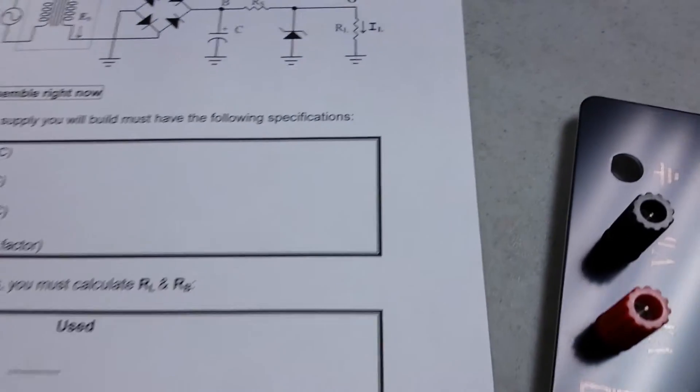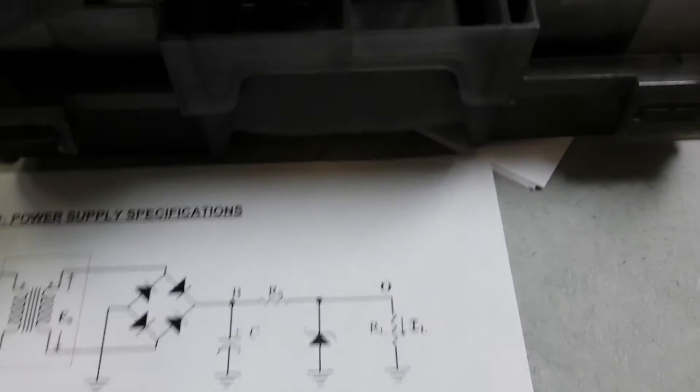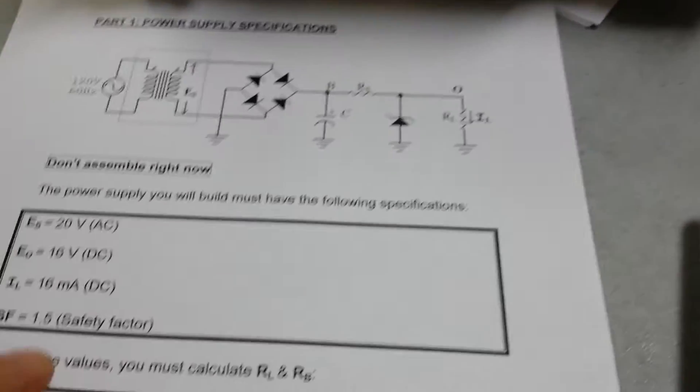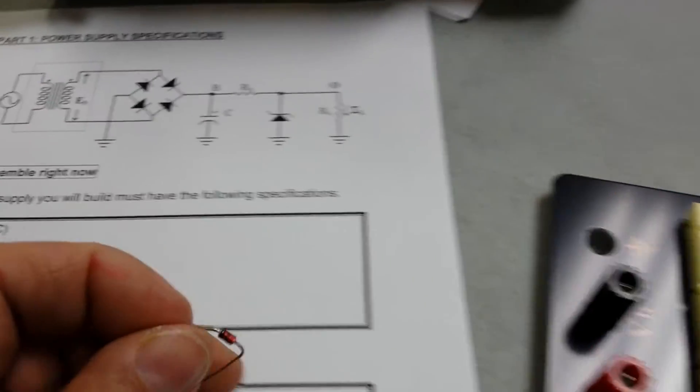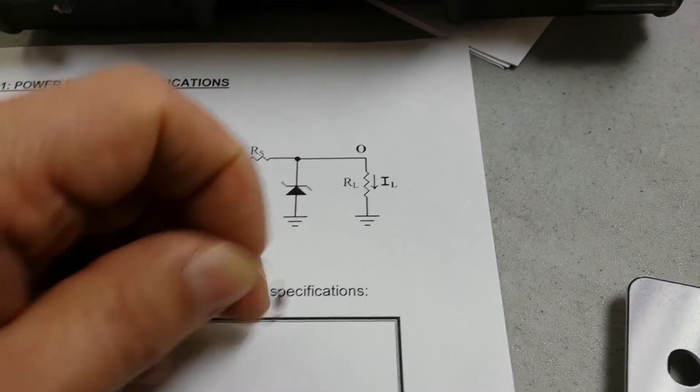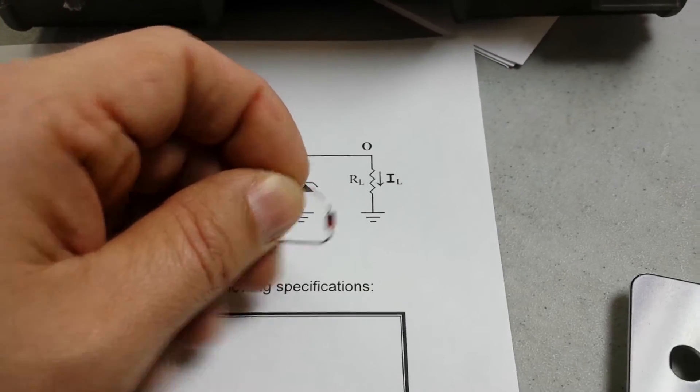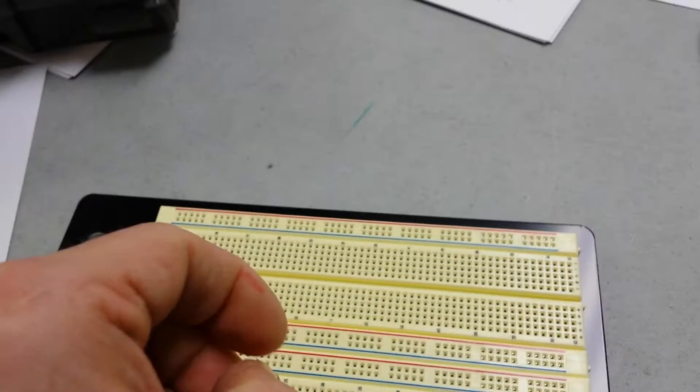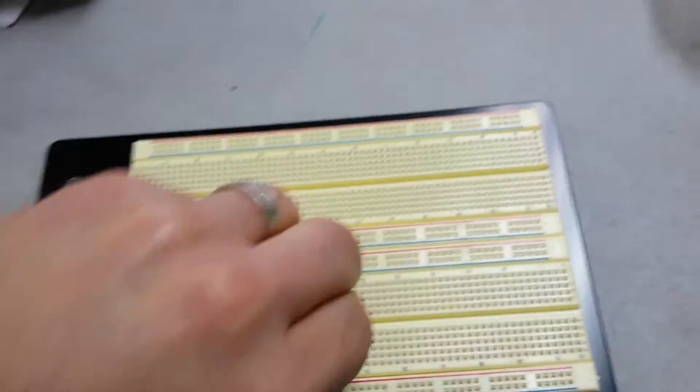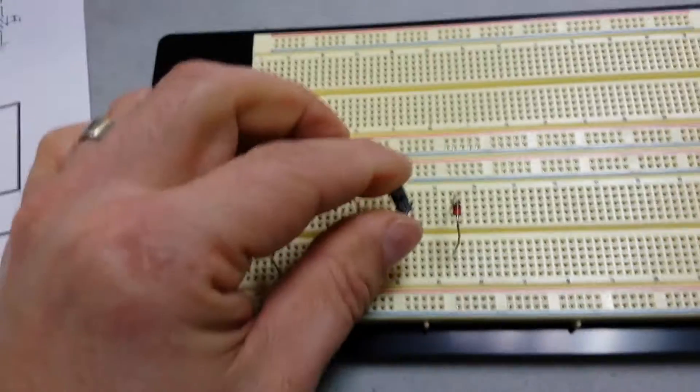The next thing is a zener diode. So the zener diode from the kit, make sure it's the appropriate one depending on what the voltage is. So with the zener, the zener is in backward. If you notice, it's the cathode anode. So the cathode is the part with the band on it. So we'll take that and I'll try to insert it here.